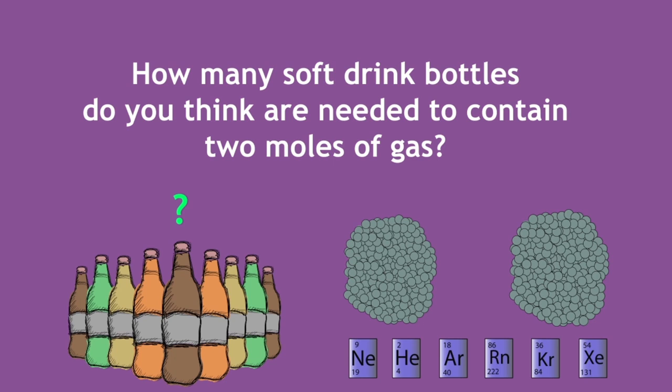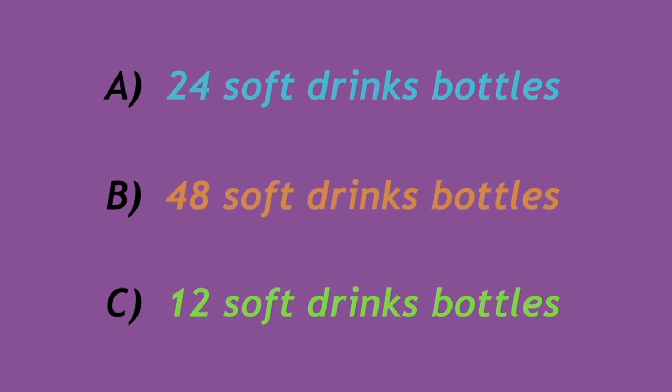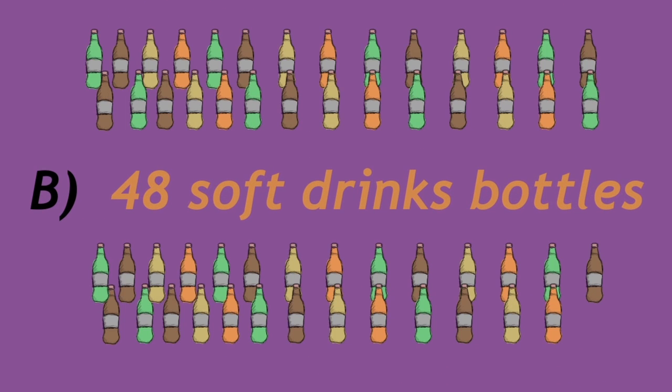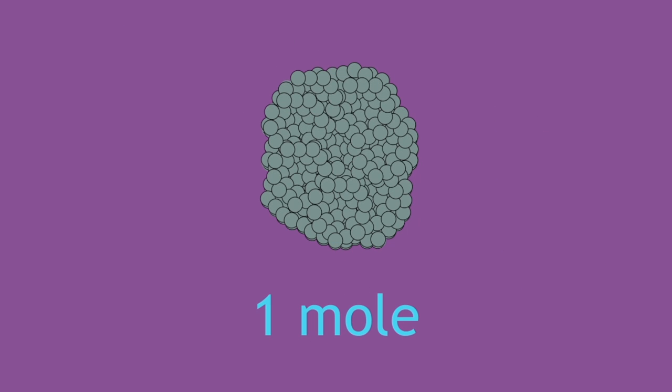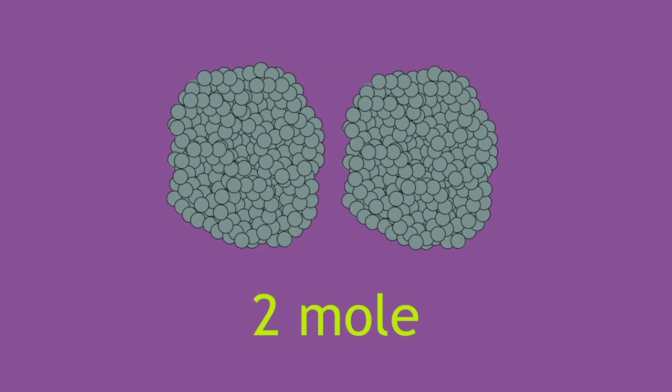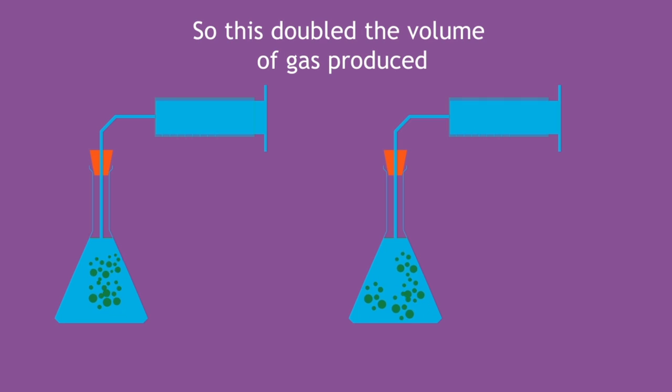Pause and choose from one of the following. The correct answer was B, 48 soft drinks bottles. This is because we doubled the number of moles of gas from 1 to 2, and so this doubled the volume of gas produced.